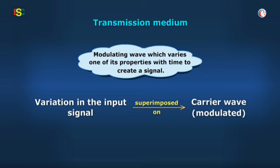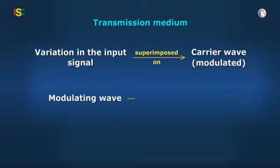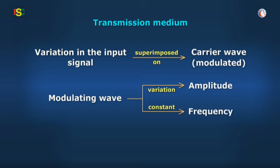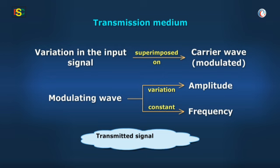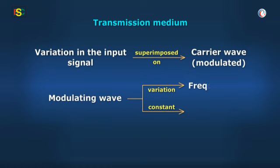Thus modulating it. If the modulating wave varies in terms of its amplitude, keeping its frequency constant, then the transmitted signal is said to be an AM signal. If the modulating wave varies in terms of its frequency,